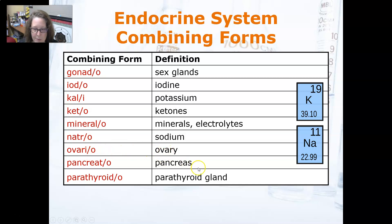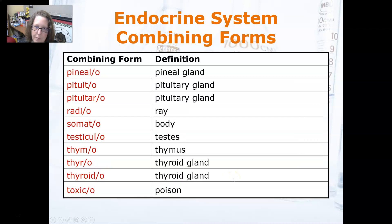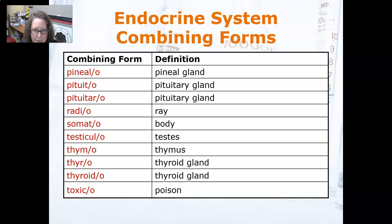Ovario is ovary. Pancreato is pancreas. Parathyroid is parathyroid gland. Pinealo is the pineal gland. Pituito and pituitaro are both pituitary gland. Radio is ray. Somato is body. Testicular is testes. Thymo is thymus. Thyro and thyroido are both thyroid gland.